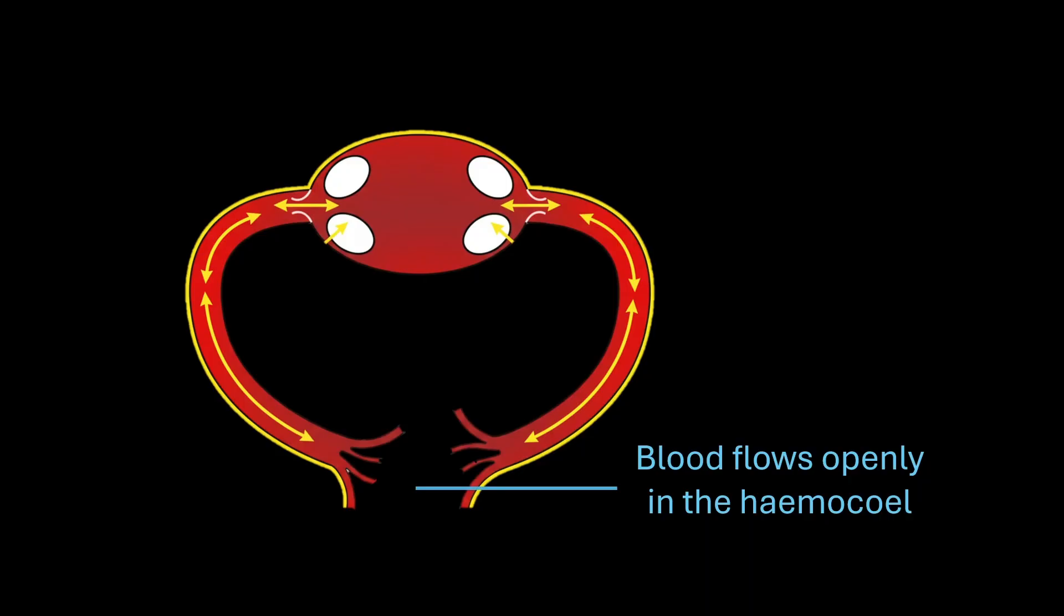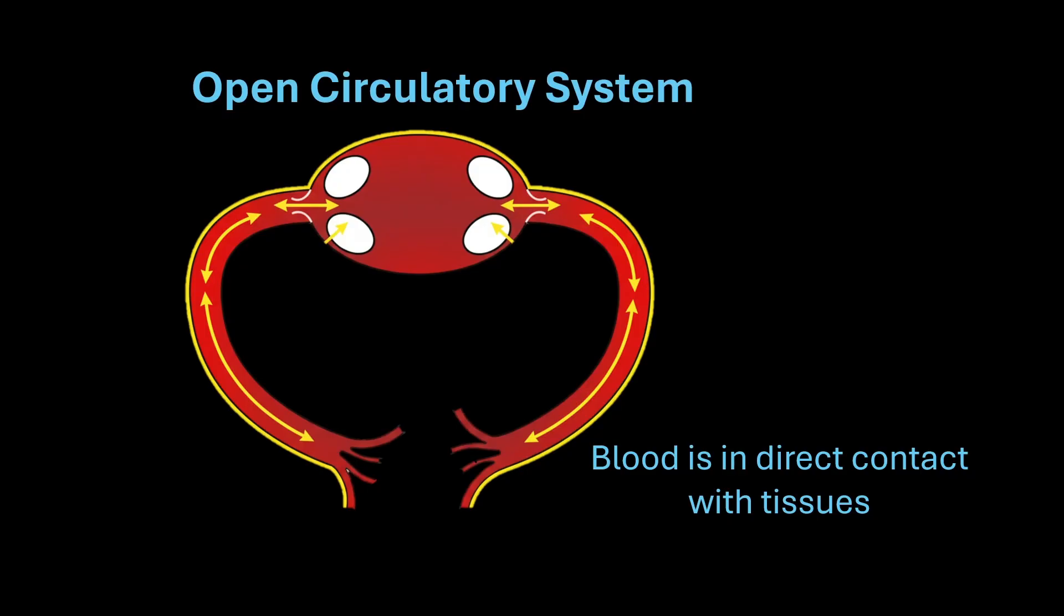The blood or the hemolymph is not confined to the blood vessels. Instead, after leaving the heart it flows openly into the hemocele, as there are no specific vessels guiding its flow. So the blood comes in direct contact with the surrounding tissues, and therefore such a system is called an open circulatory system.